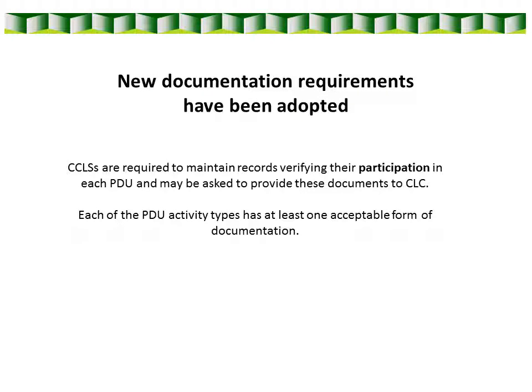With regards to documentation, there are a few critical things to remember. If your application is selected for the random audit, you may be asked to submit documentation of each of the PDUs you listed on your application. What the auditors are looking for is proof of your participation. This doesn't include flyers, advertisements, or registration documents, because these don't show that you attended the session. It includes things like certificates of completion which show that you participated. Every activity type has at least one acceptable form of documentation.